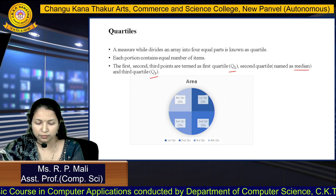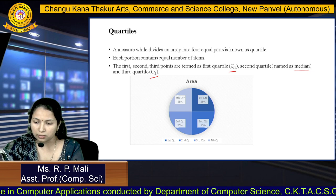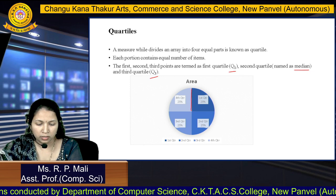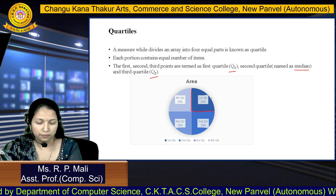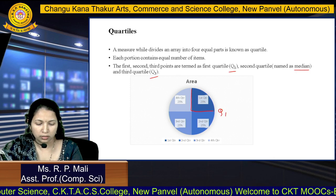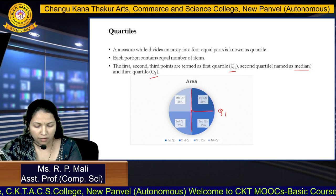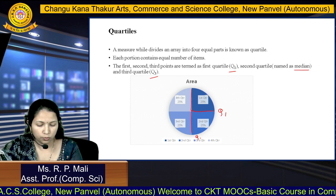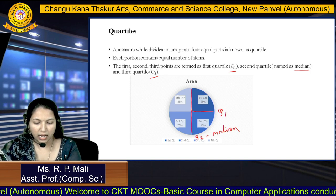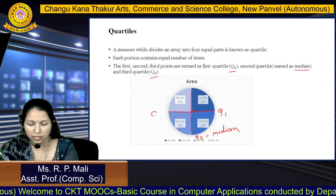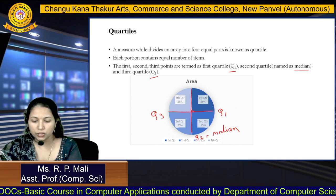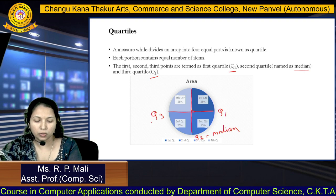This is a graphical representation of your quartile. Consider this circle as your distribution. The first quartile is at the 25th percentile of your distribution, so here you will get Q1. At the half of your distribution, you will get Q2, or you can say your median. After that, at this point, you will get your third quartile. Your first quartile is also known as the lower quartile, and your third quartile is also known as the upper quartile.